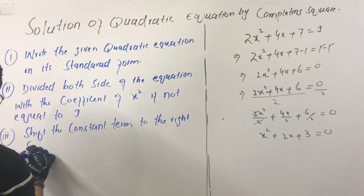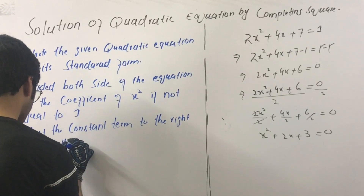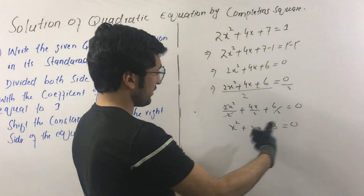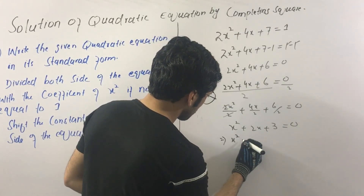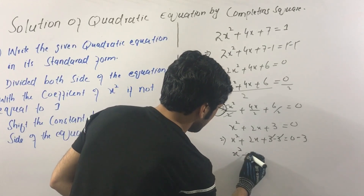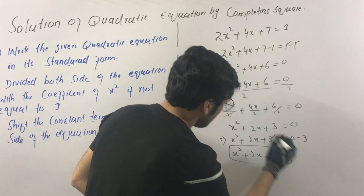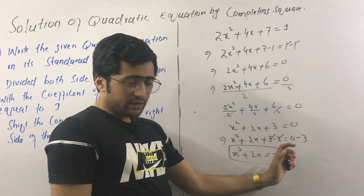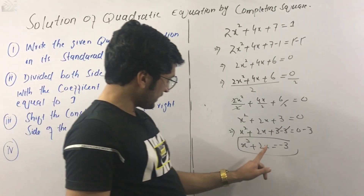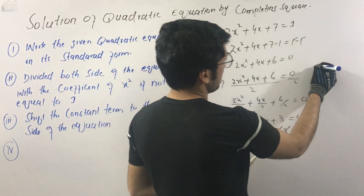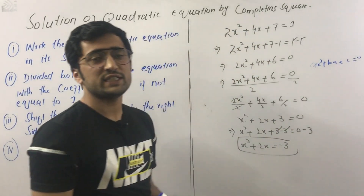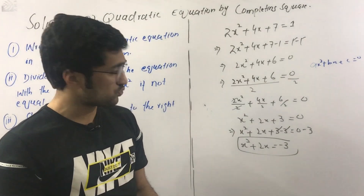Now shift the constant term to the right side of the equation. We have x squared plus 2x plus 3 minus 3 equals zero minus 3, so the constant cancels on the left. The next step involves the coefficient of x, which is 2; divide 2 by 2 to get 1, then square it to get 1.